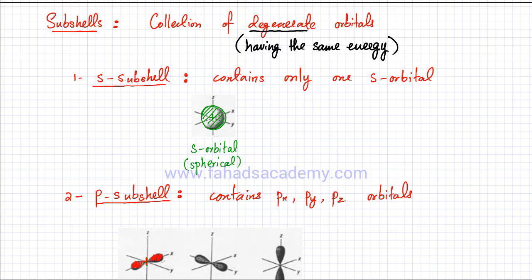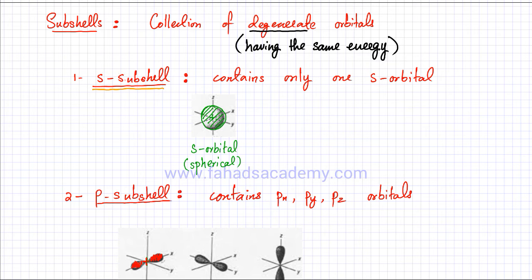We're going to start off with the first subshell, which is the S-subshell. The S-subshell only contains one S-orbital. So if an electron is in the S-subshell, that means it's going to be in the S-orbital, which is a spherical region around the nucleus. The nucleus is at the center, and there's going to be a spherical region around it where there's a high probability of finding that electron.